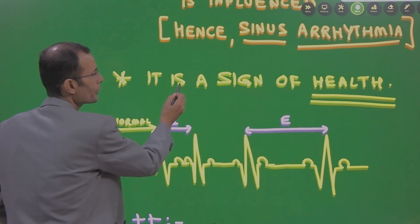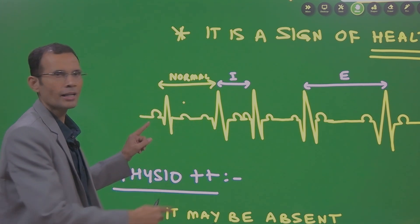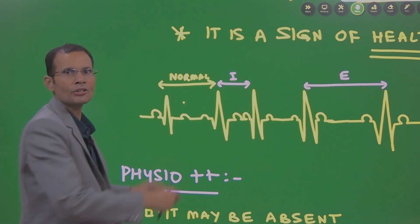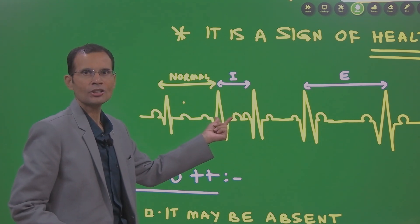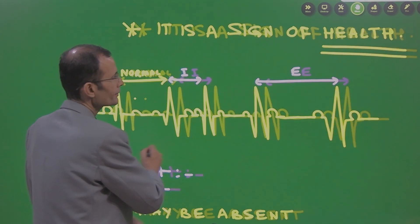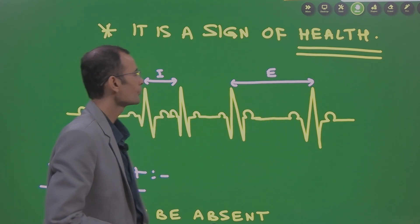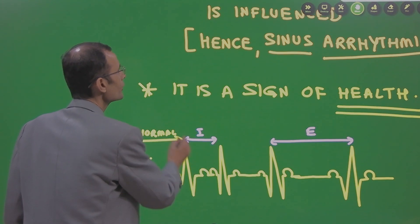Remember how it will appear on the ECG. If you see a normal RR interval, this is a normal heart rhythm. And with inspiration, it has accelerated and with expiration, it has got slowed down. Heart has got slowed down. That is how the ECG will appear.